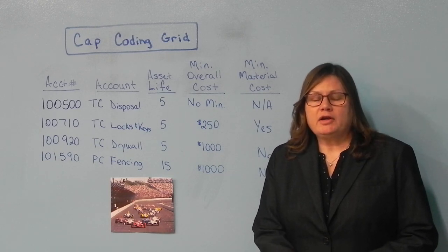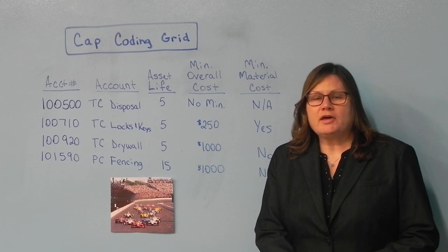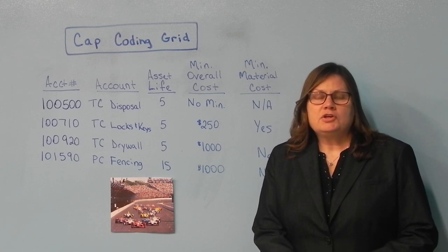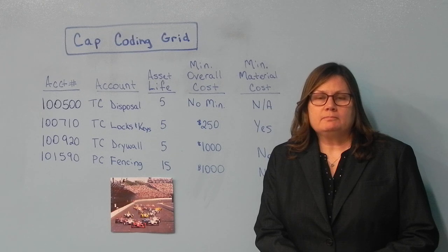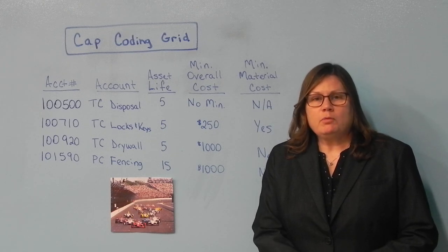However, some items do require a $250 or $1,000 minimum cost. You can find those on your coding grid that's available in Coupa. One example would be your drywall that requires a $1,000 minimum per unit.